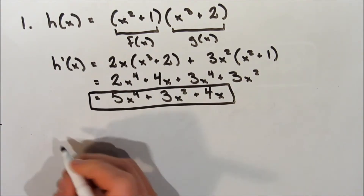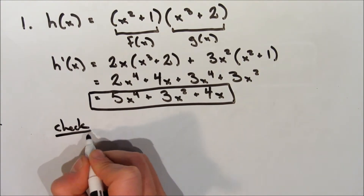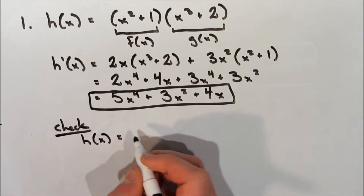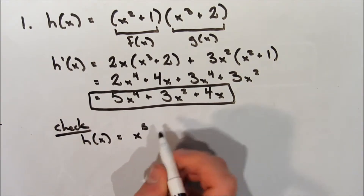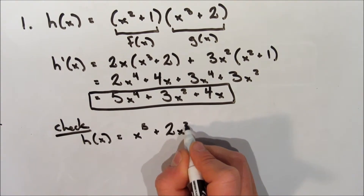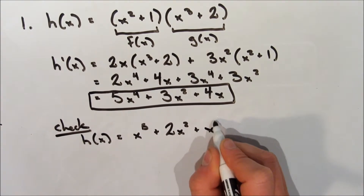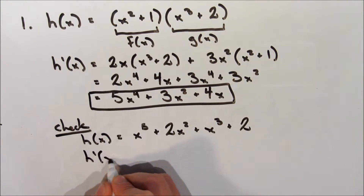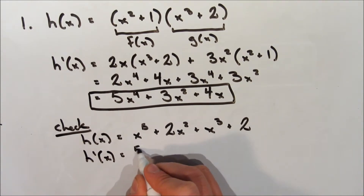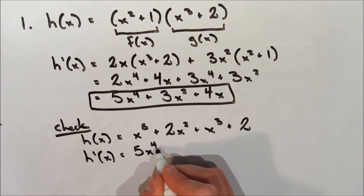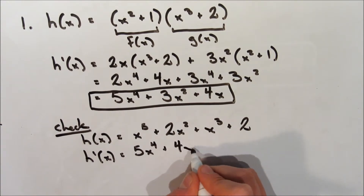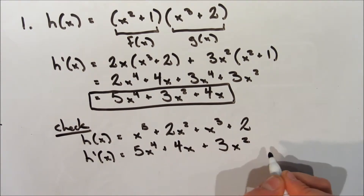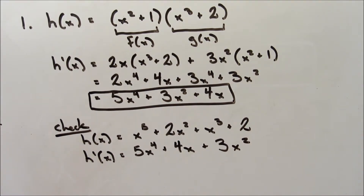Let's check our answer by doing it the way we know from before. We take our original h of x and expand all the terms: x to the 5th plus 2x squared plus x cubed plus 2. Now we find the derivative of this directly, which gives us 5x to the 4th plus 4x plus 3x squared.